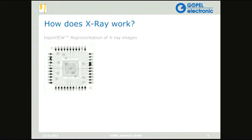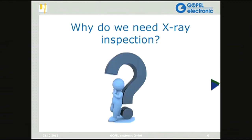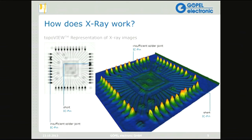On slide five we have another image showing a different way of interpreting X-ray images: the top-of-view system, which is a 3D representation of layers from the PCB up. You can see the chip, the internal leads inside the plastic body, and the solder pins. Looking at those pins you can see the various faults which correspond to the faults on the pure AXI image — including a short and insufficient solder on one pin.